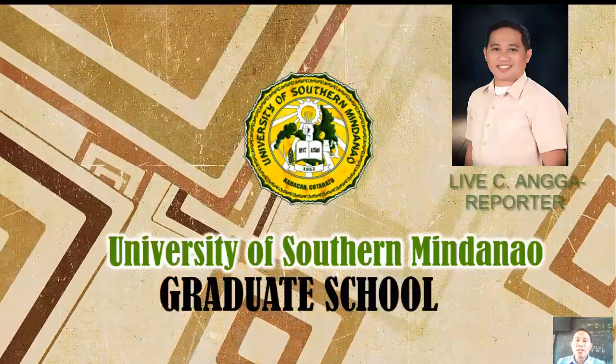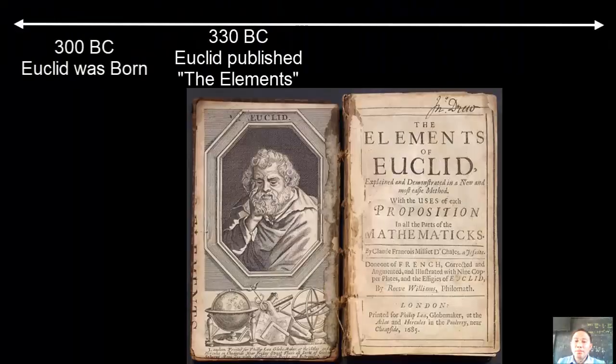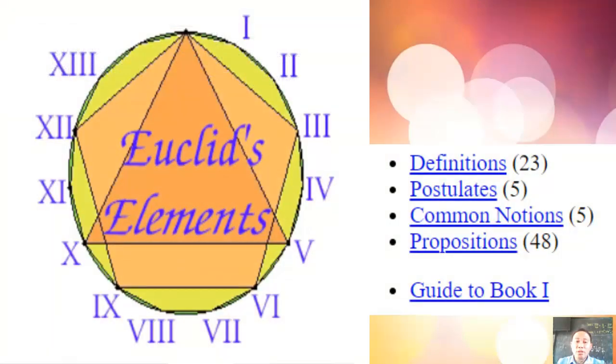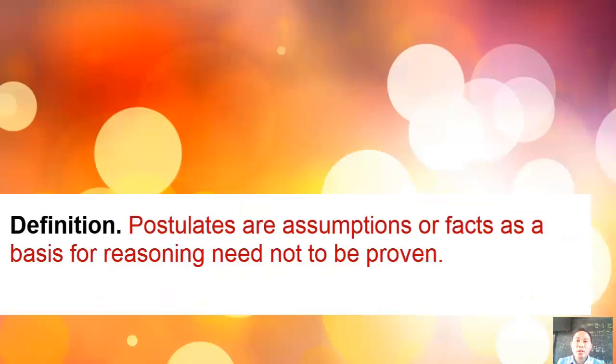It was 330 BC. A 30-year-old Euclid published the Elements, containing 13 books. Book 1 contains 23 definitions, 5 postulates, 5 common notions, and 48 propositions.